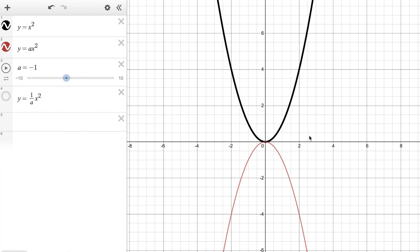And of course I can combine these transformations so that I can have a reflection over the x-axis but I could also have a stretch by a factor of two. So you can see that this parabola is thinner, it's vertically stretched by a factor of two in addition to the reflection over the x-axis.